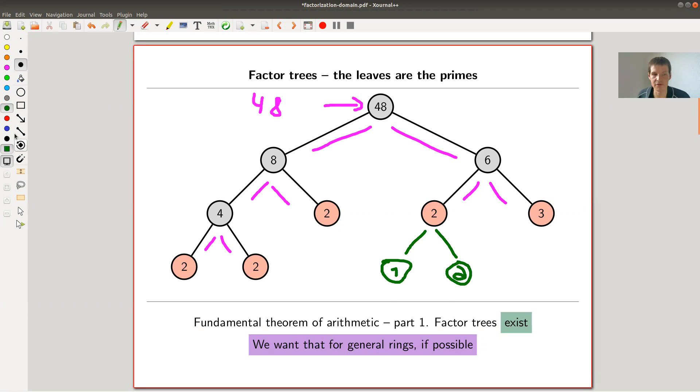So you don't want that because 1 is an invertible element. And in ring theory, we don't care about invertible elements. So you're kind of stuck, or you kind of stop here. Same for 3 and for the other 2s. And yeah, so that's what's called a factor tree.